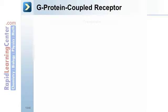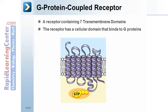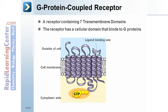A G-protein coupled receptor (GPCR) contains seven transmembrane domains. The receptor has a cellular domain that binds to G-proteins. The ligand binding site is on the outside, and the G-protein binding domain is on the cytoplasm side.